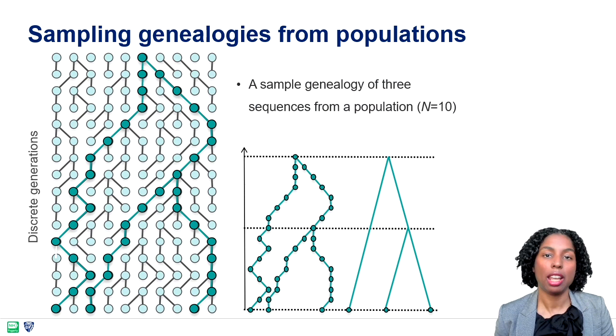Here we have a sample genealogy of three sequences from a population of ten individuals. Now we can clearly see when coalescent events occur and estimate the time for coalescence.